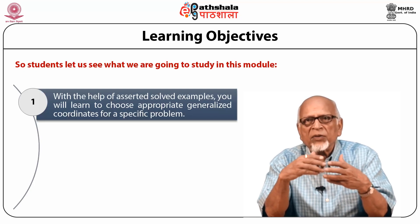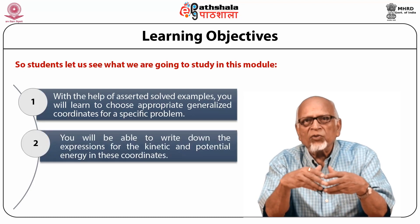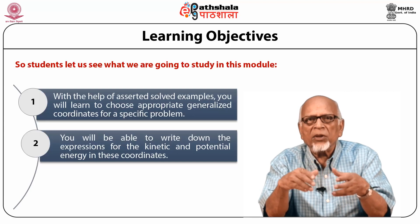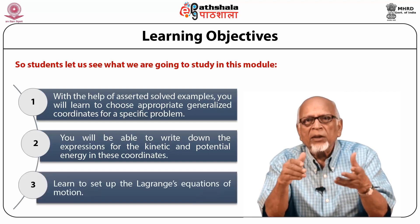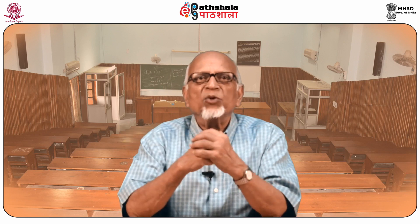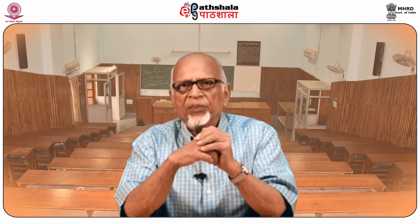Having made the choice of the generalized coordinates, you will be able to write down the expression for the kinetic and potential energy in these coordinates. And once that is done, we can set up the Lagrangian's Equation of Motion. In order to describe the motion of a specific system, it is important to make a suitable choice of the generalized coordinates. The suitable choice depends on the degrees of freedom of the specific problem, and they should be chosen to render the expressions of the Lagrangian simple.